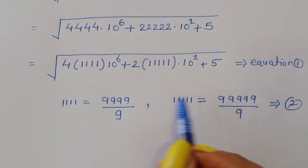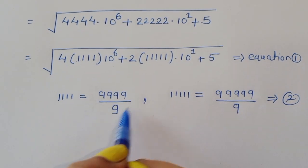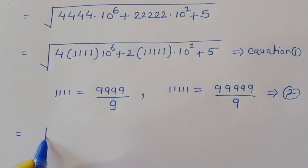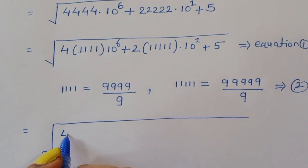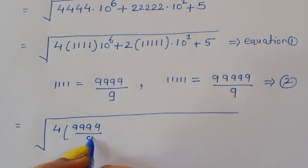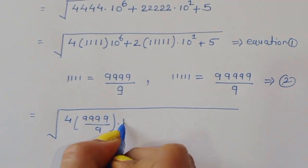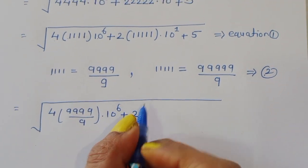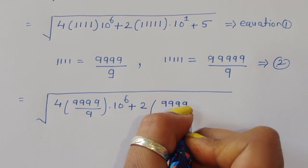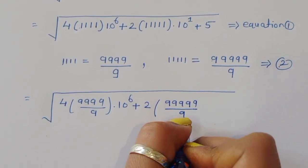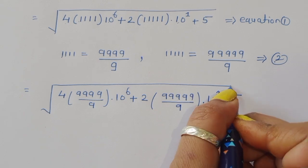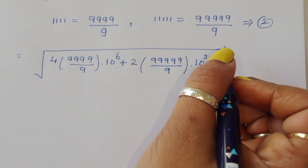Comparing equations 1 and 2, we substitute: 1111 becomes 9999/9 and 11111 becomes 99999/9. So our expression becomes: square root of 4 times (9999/9) times 10^6, plus 2 times (99999/9) times 10^1, plus 5.